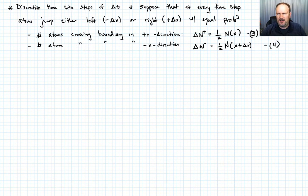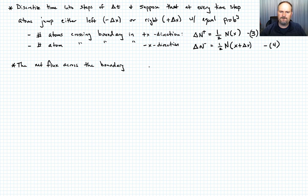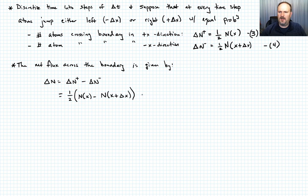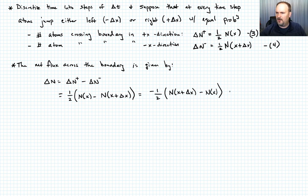The net flux of atoms across the boundary is however many go positive minus however many go negative. So ΔN = ΔN+ − ΔN− = ½ N(x) − ½ N(x + Δx), which we rearrange to −½ [N(x + Δx) − N(x)]. Let's call that equation 5.